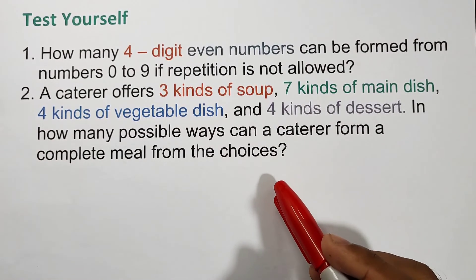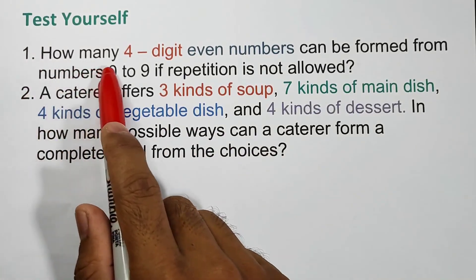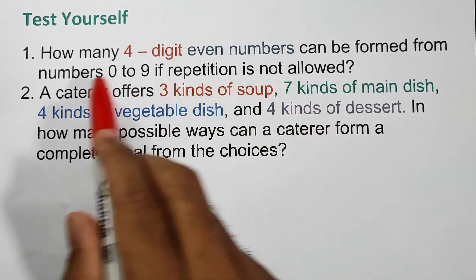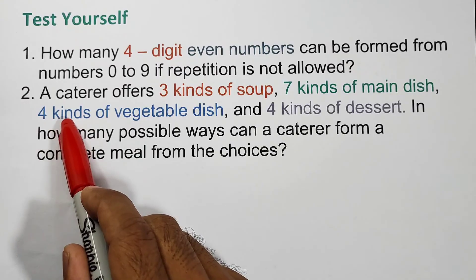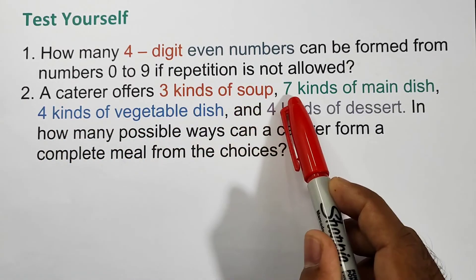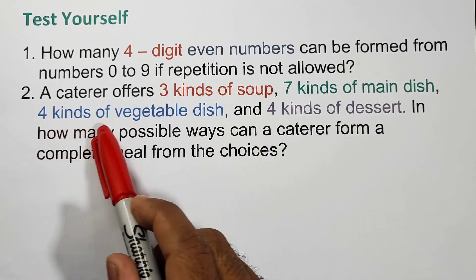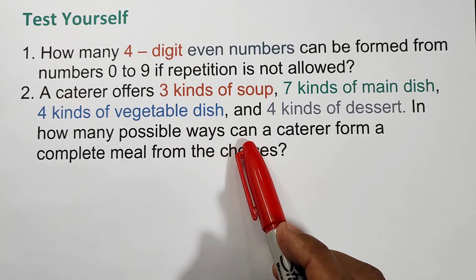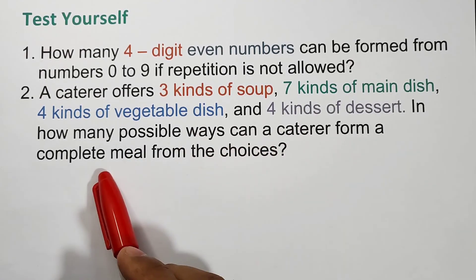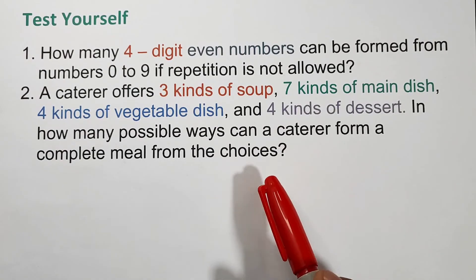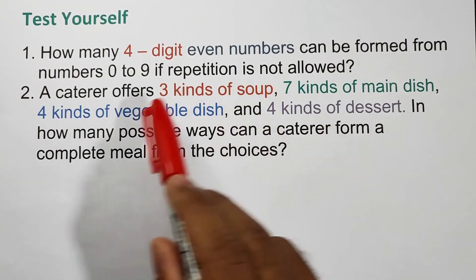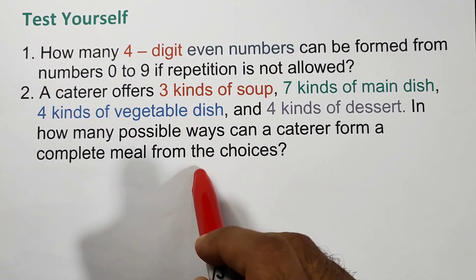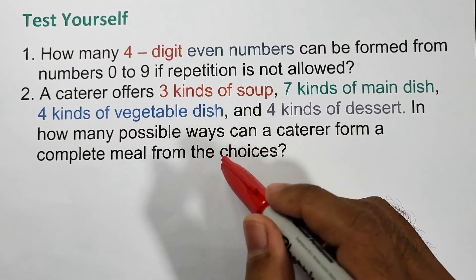For more practice, try these yourself. Item one: how many four-digit even numbers can be formed from 0 to 9 if repetition is not allowed? Item two: a caterer offers three kinds of soup, seven kinds of main dish, four kinds of vegetable dish, and four kinds of dessert. In how many ways can a caterer form a complete meal? You may comment your answers in the comment section below.